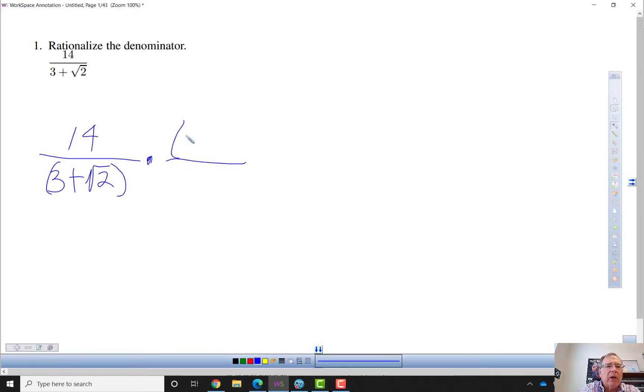So we're going to multiply by 1 in the form of 3 minus the square root of 2 divided by 3 minus the square root of 2.